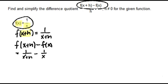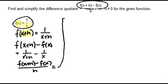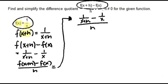Finally, we want to find the whole difference quotient, which is f of x plus h minus f of x over h. We've already got the whole numerator: that's 1 over x plus h minus 1 over x, over h. And this is our difference quotient, which we want to simplify.